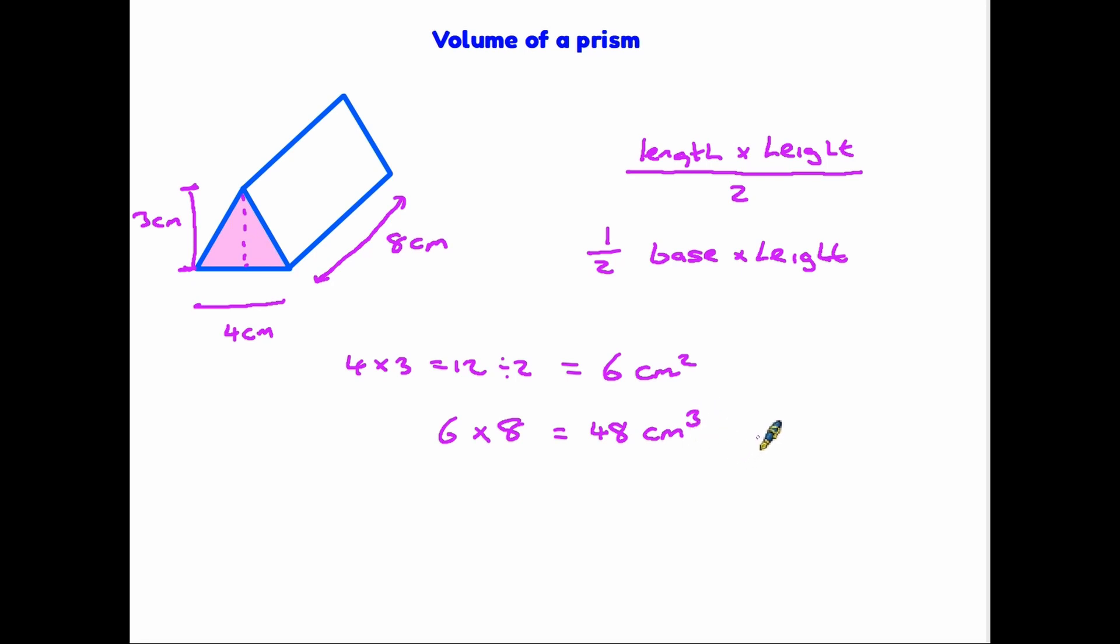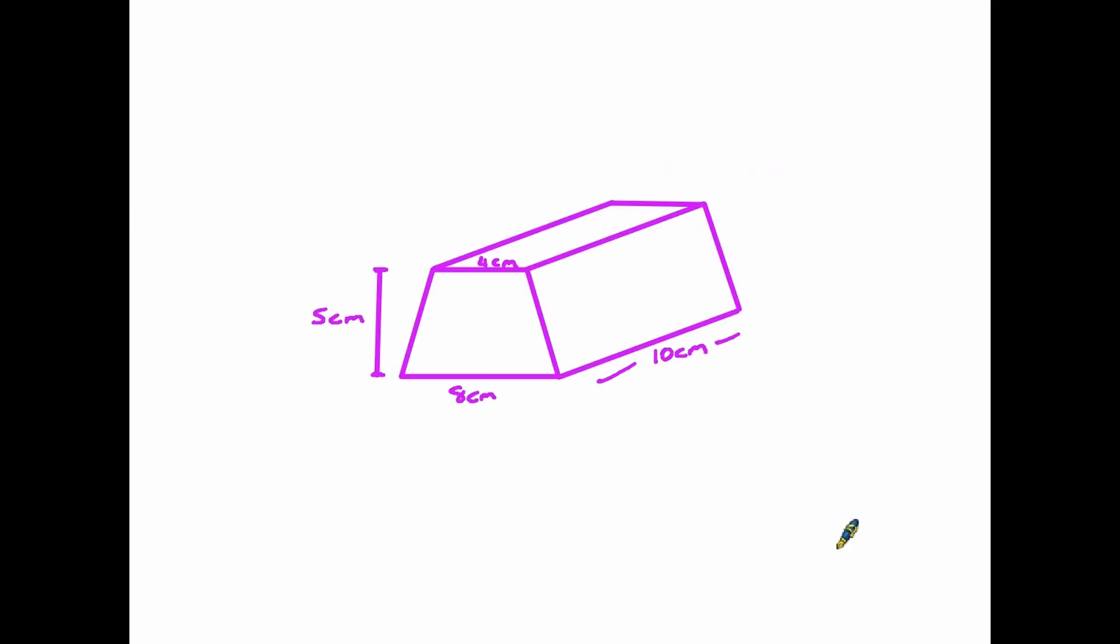Let's have a look at another example. Here we have a prism where the front side is a trapezium. So again, the front and back side would be the same, and you can slice it through and get trapeziums all the way along, so it's a prism. Again, our trick now is to work out the area of the front face. I've already put some measurements on here. The base length is 8 centimeters, the height is 5 centimeters - the vertical height. I've also included the length of the top side being 4 centimeters. Then we have the length which is 10, which will come last.